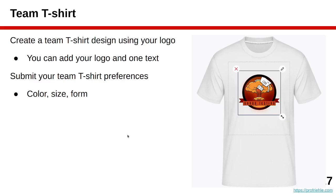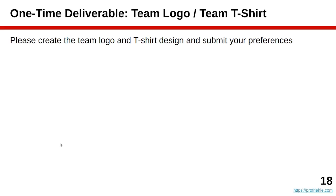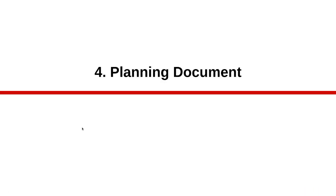We would love to see a team photo at the end, so you will probably want a T-shirt for that. The T-shirt request will ask for preferences: color, size, and form. A survey will explain the specifics. Create your team logo, put it on a T-shirt design, and submit your preferences — or submit none if you don't want a T-shirt — within the first week.